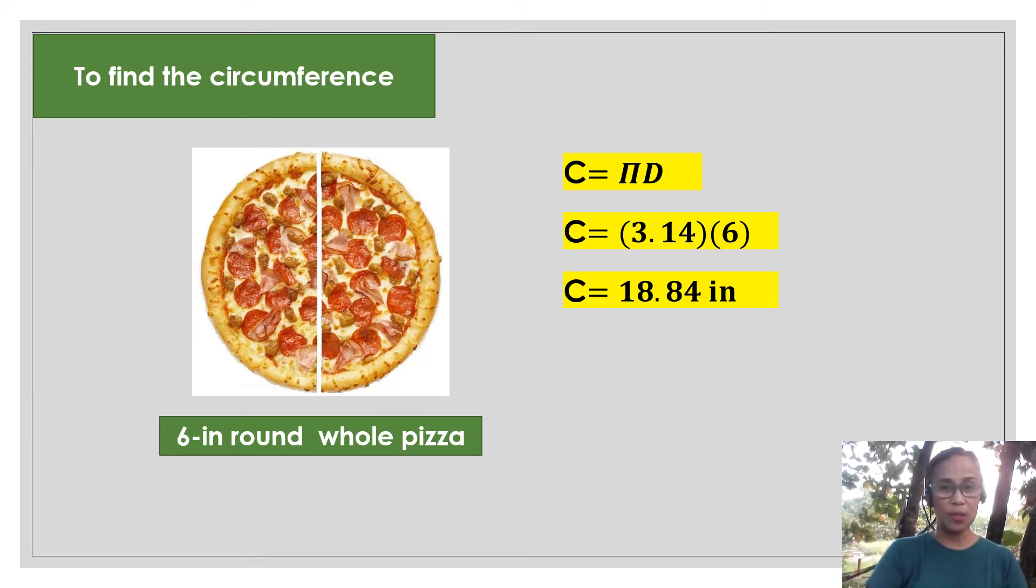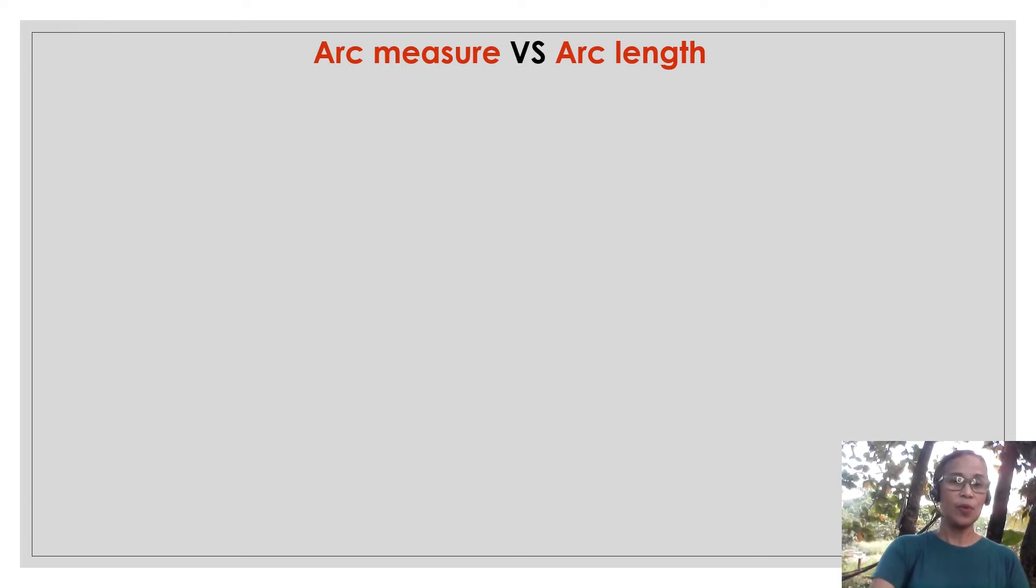We are now going to compare the circumference of the round to the half-slice pizza. But this time, we are not going to use the formula circumference. But instead, since it's only half-slice, we will use now the formula for arc length. We will now first compare what is an arc measure versus an arc length.